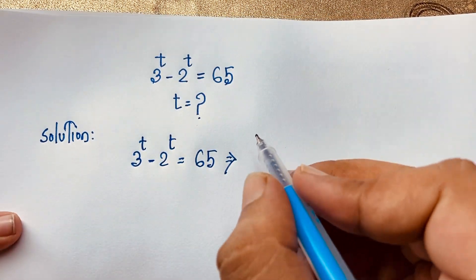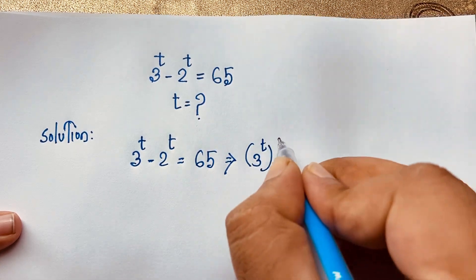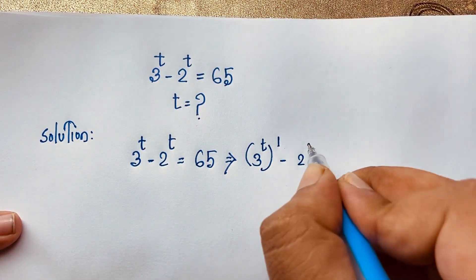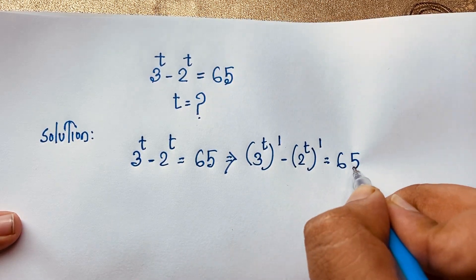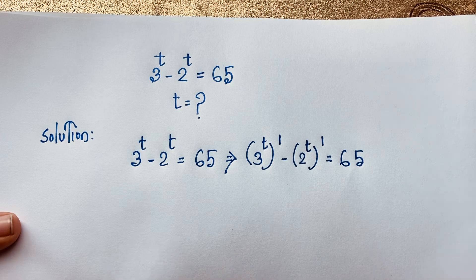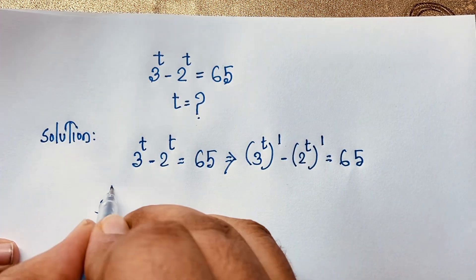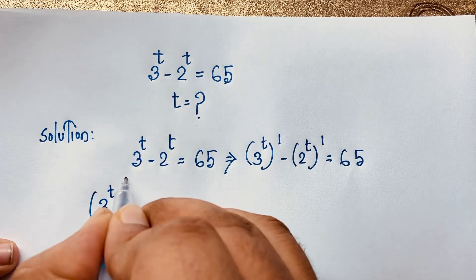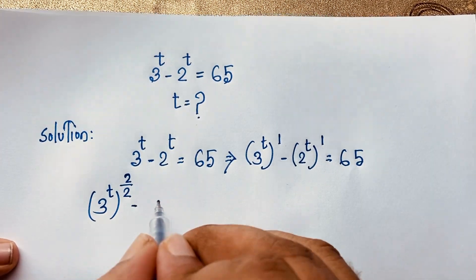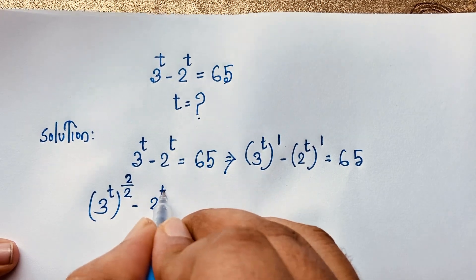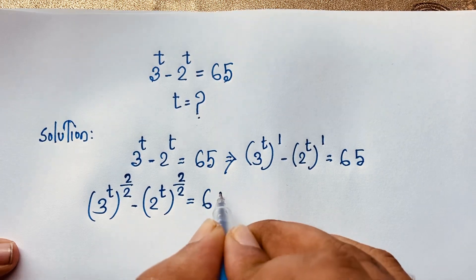This expression can be written as 3 to the power t, bracket to the power 1, minus 2 to the power t, bracket to the power 1, is equal to 65. Now I rewrite each term: 3 to the power t becomes 3 to the power t bracket to the power 2 over 2, and similarly 2 to the power t becomes 2 to the power t bracket to the power 2 over 2, equal to 65.